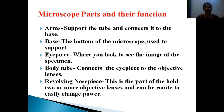Microscope Parts and Their Functions: First, the arm supports the tube and connects it to the base. The base is the bottom of the microscope used to support it. The eyepiece is where you look to see the image of the specimen. The body tube connects the eyepiece to the objective lenses. The revolving nosepiece holds two or more objective lenses and can be rotated to easily change magnification power.